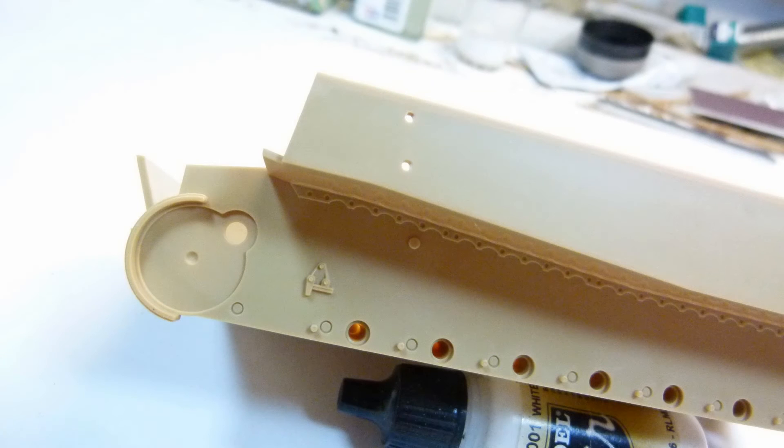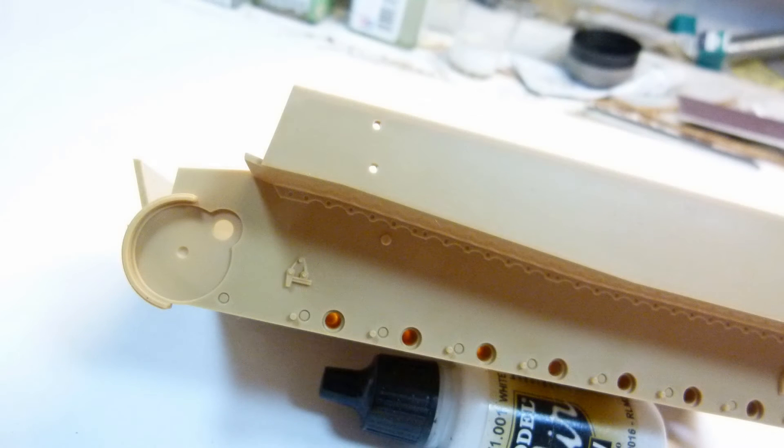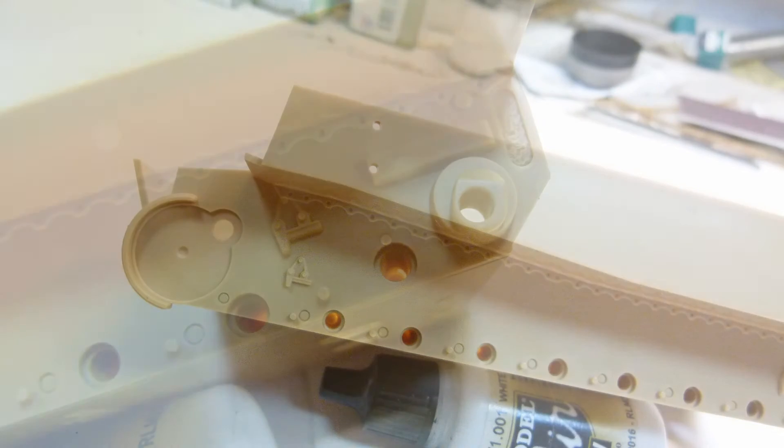If we look at the lower hull on the inside, you can see all the markings for the internals when it was used as the full interior kit, but the detail on the hull is nice, nice and crisp.